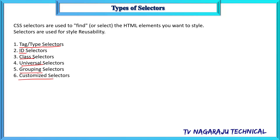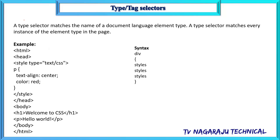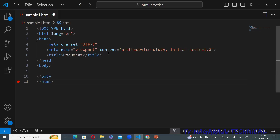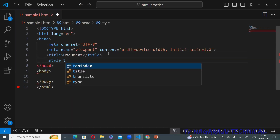We will discuss each selector with one example. The first one is the type selector, also called the tag selector. The meaning is: we simply write one selector in the style tag, and in the body section it checks for a matching tag name. If the tag name matches, the property is applied to that particular element.